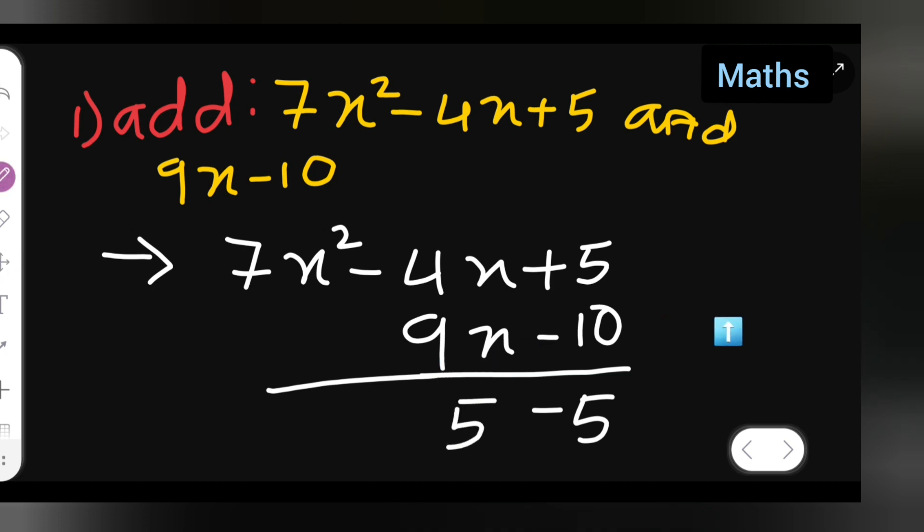After that, you'll have to write the 7x² as it is. 7x² plus will come, so 7x².